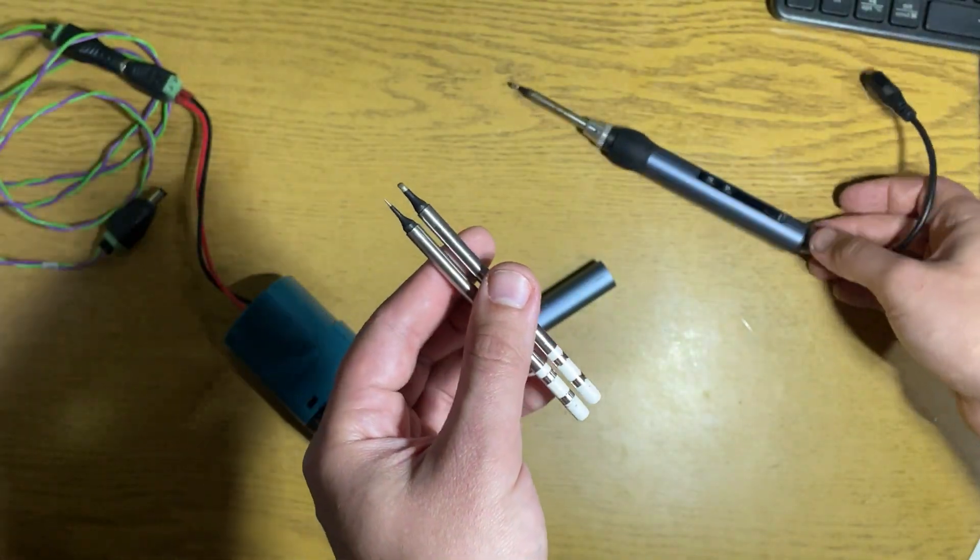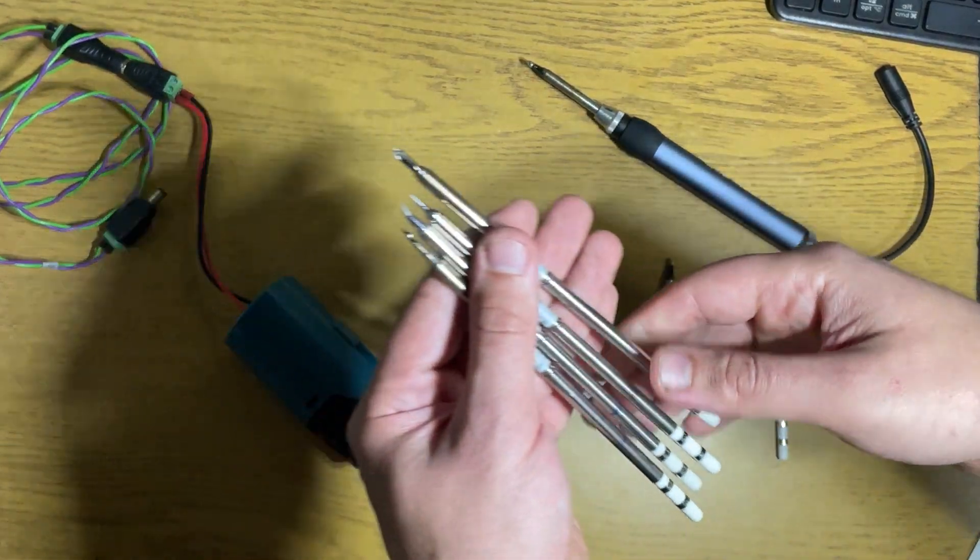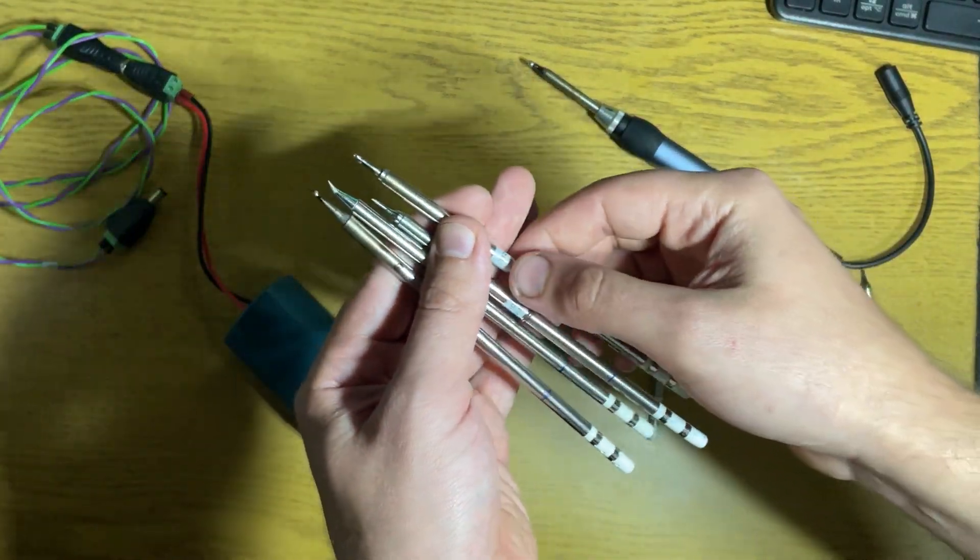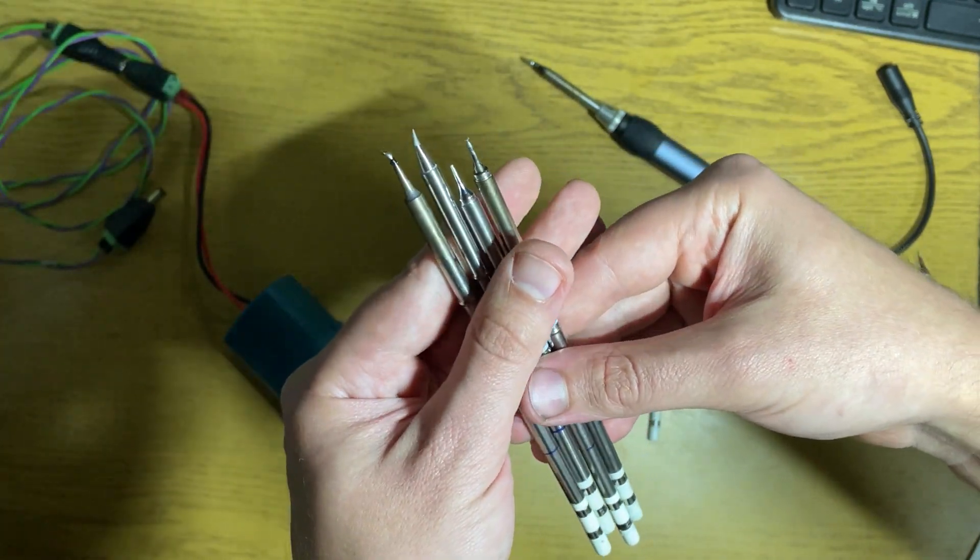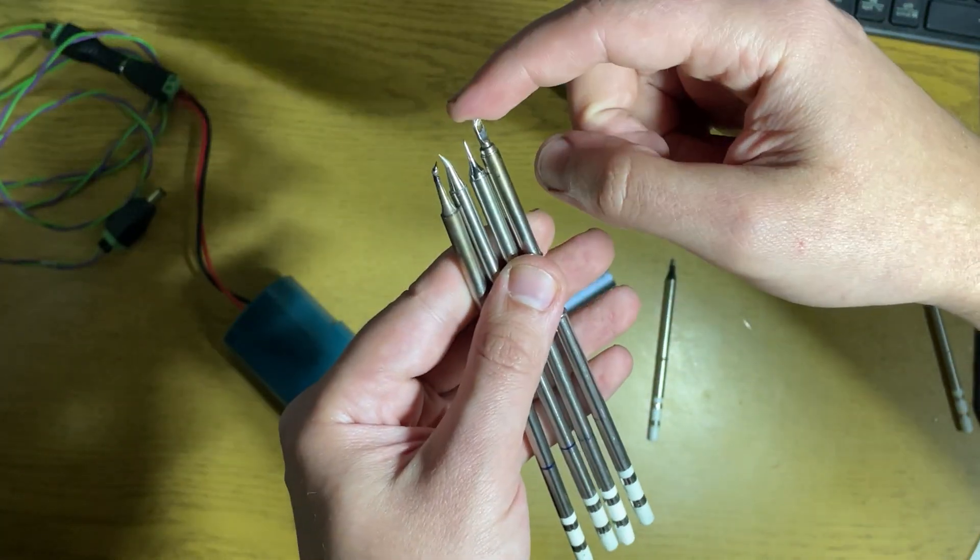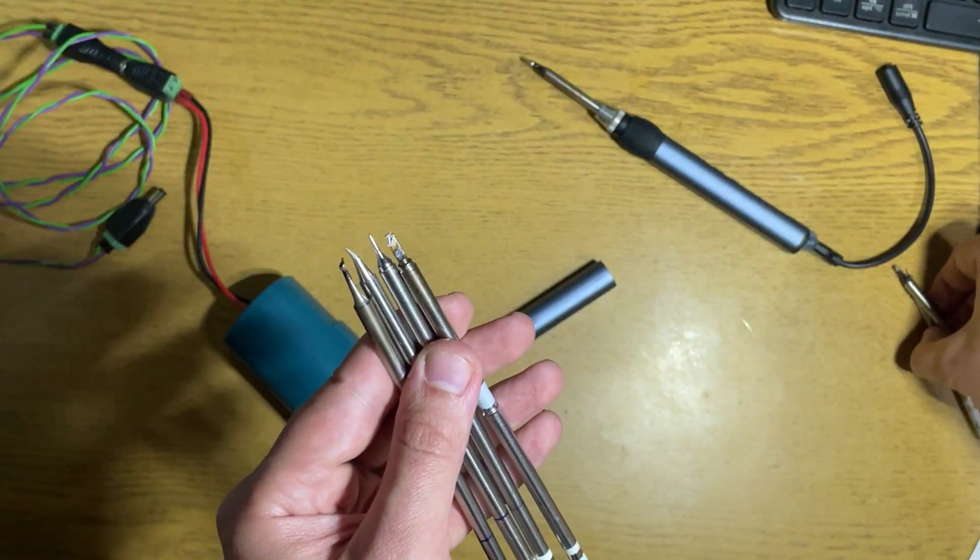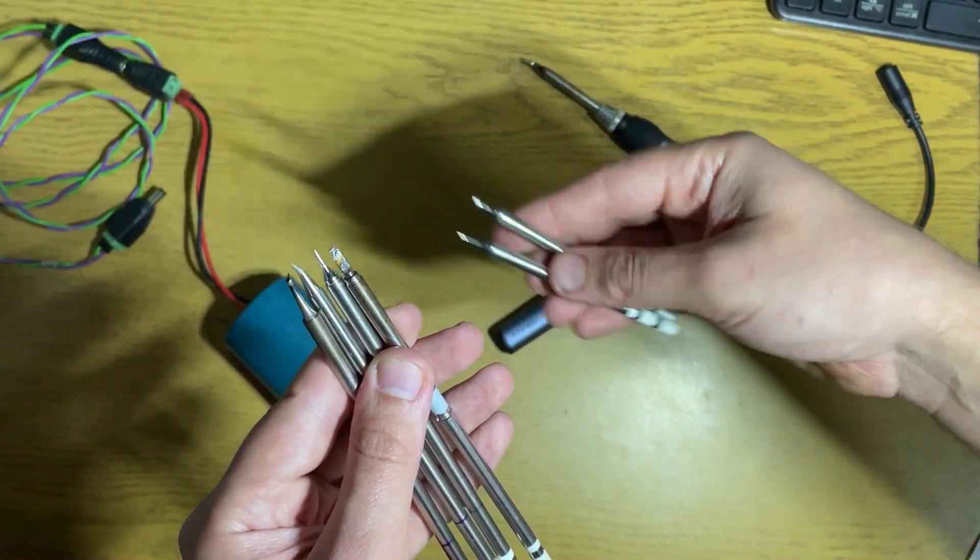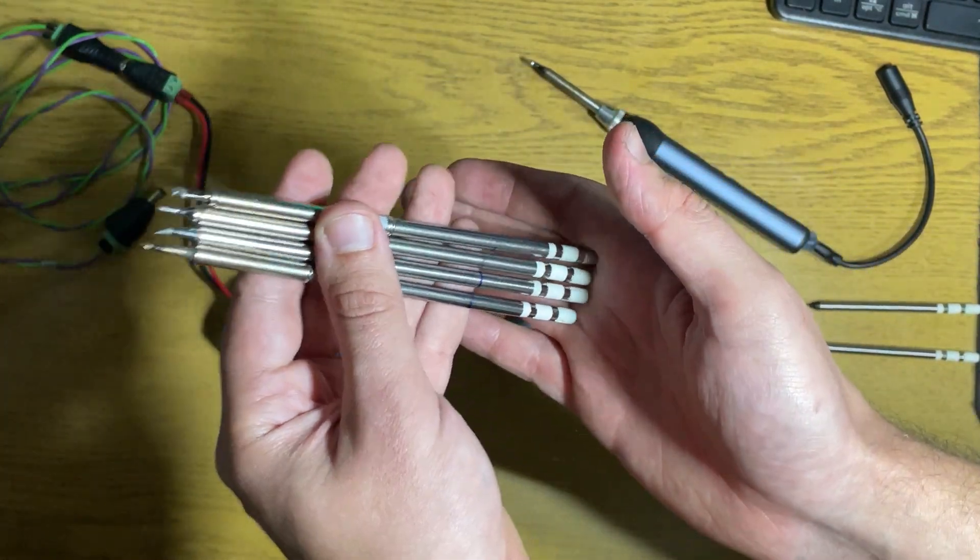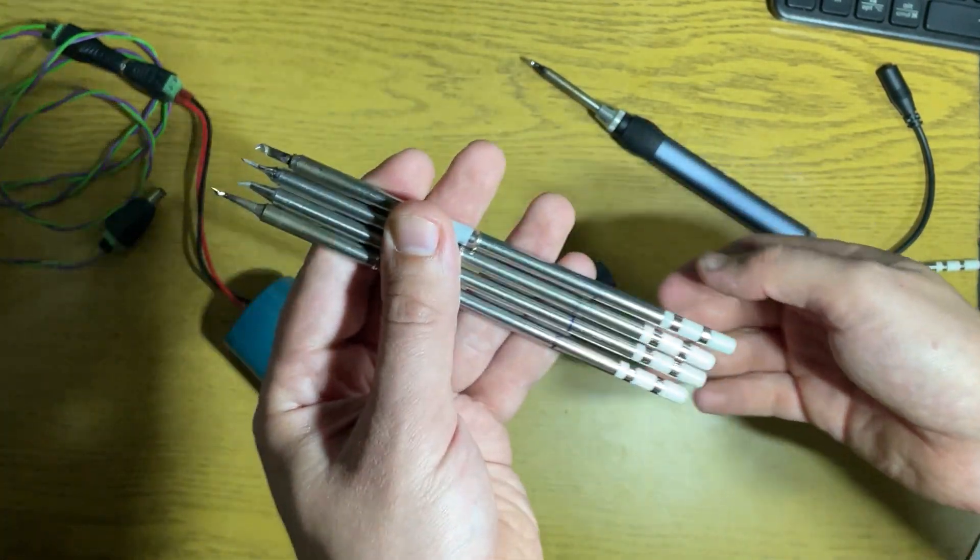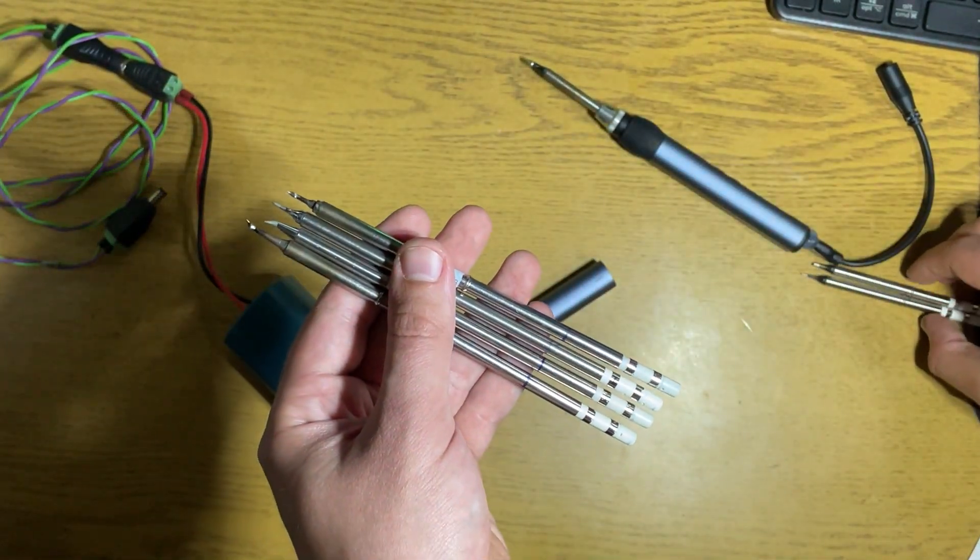By mistake, I actually bought T12 tips because I wanted to have some tip types which are not available in this version. The good thing is that the resistance of this tip is the same as those, or very close. But the thing is that this is not really compatible mechanically with the soldering iron.